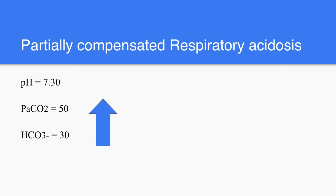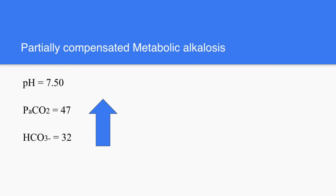Let us do this one quickly. The pH is 7.30, the PaCO2 is high, and the bicarb is high — so both are high. We said this is partially compensated because the pH is still not within normal. So this is partially compensated respiratory acidosis. What about this one? The pH is 7.5, so there's alkalosis. PaCO2 is high and bicarb is high. The alkalosis is caused by the high bicarb, and the PaCO2 is also rising to compensate. So this is partially compensated metabolic alkalosis.